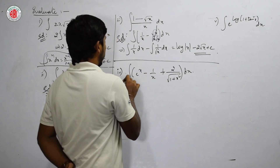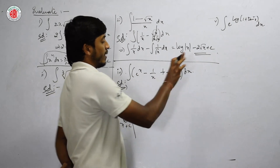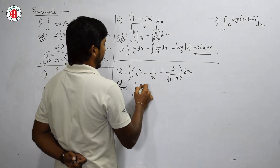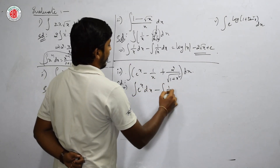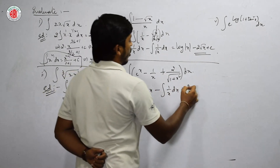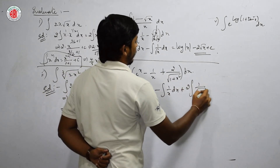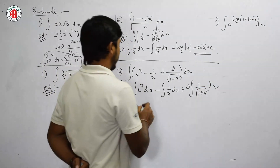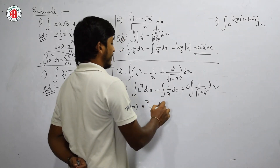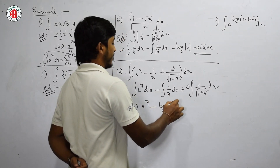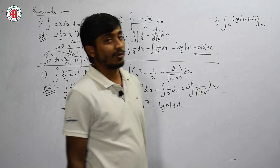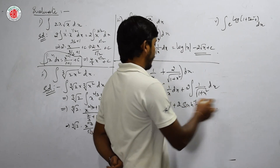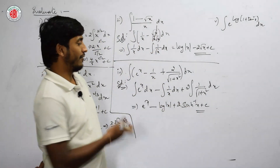Next question: ∫(e^x - 1/x + 2/√(1+x²)) dx. Let us separate the integral: ∫e^x dx - ∫(1/x) dx + 2·∫(1/√(1+x²)) dx. The integral of e^x is e^x. The integral of 1/x is log|x|. The integral of 1/√(1+x²) is sinh⁻¹x + c. We got the direct answer.